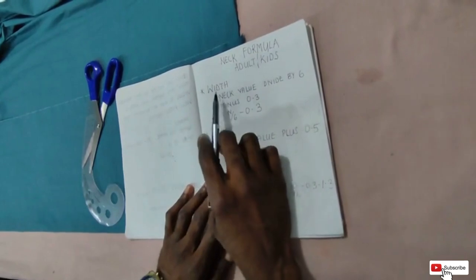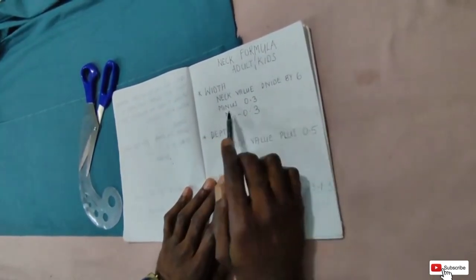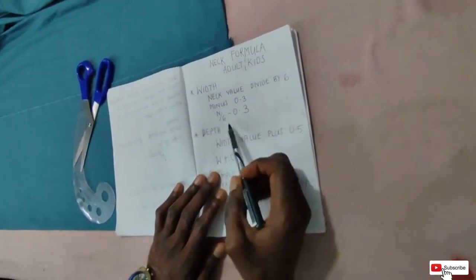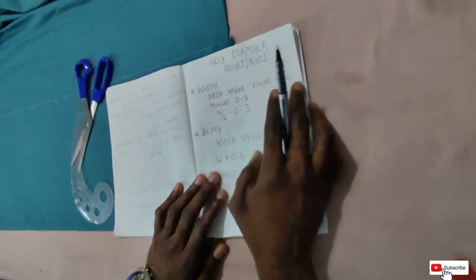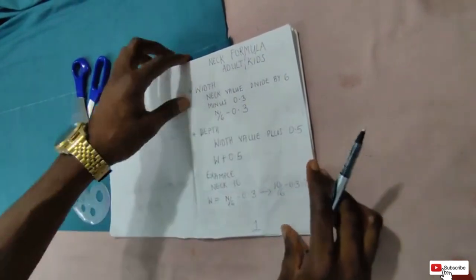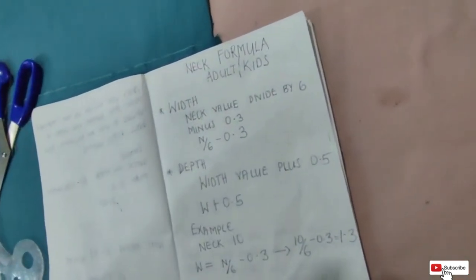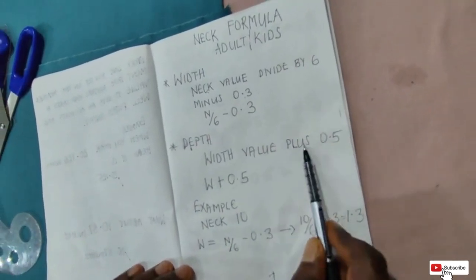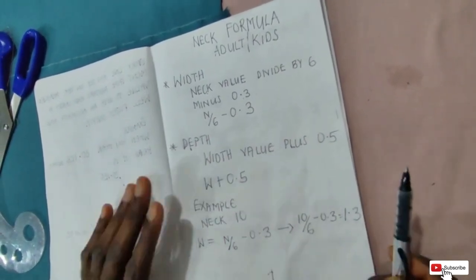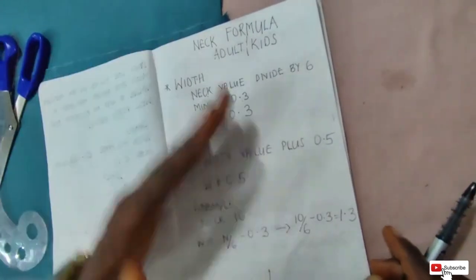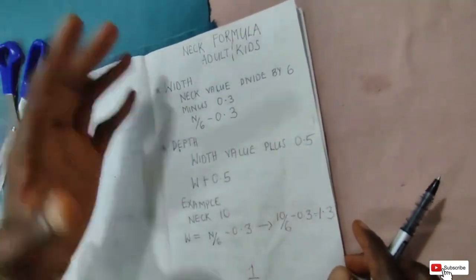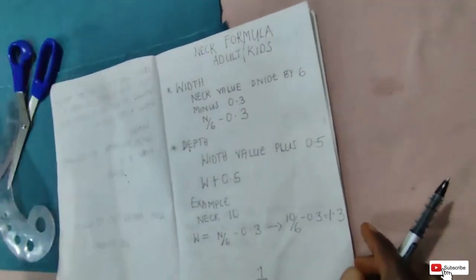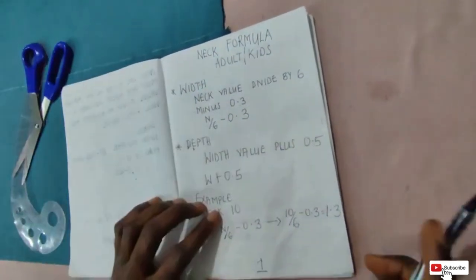Now to cut your neck, I also explain for a round neck or pipe neck. The width of any neck formula is: neck value divided by 6 minus 0.3. The depth is the width value plus 0.5. Take note — there is a formula behind this that it derived and ended up with this result, but I don't want to bother us with that.